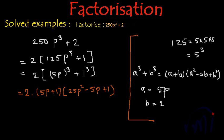So the factors of 250p³ + 2 will be 2(5p + 1)(25p² - 5p + 1). These are the three factors of 250p³ + 2.